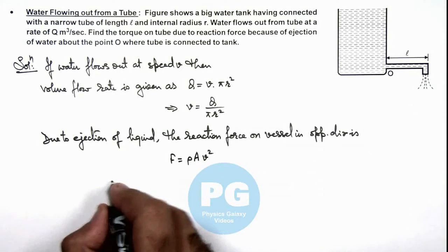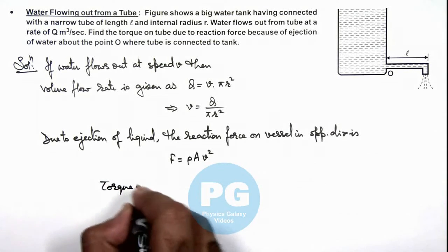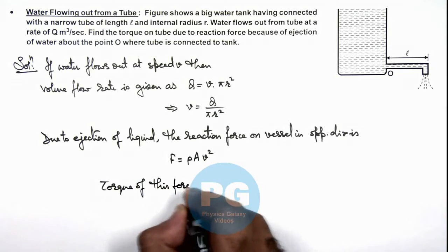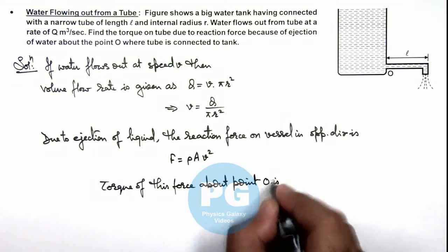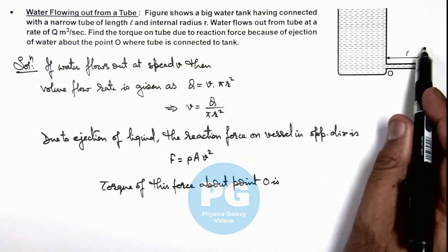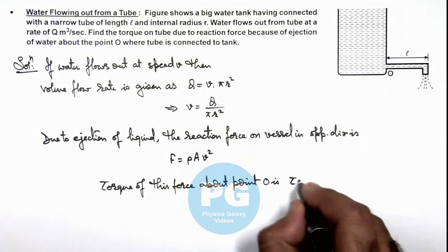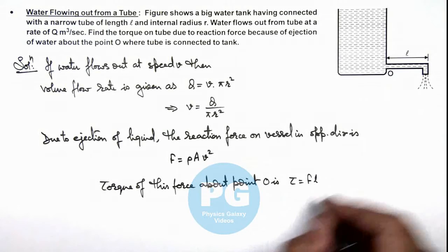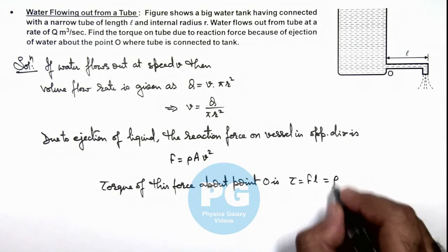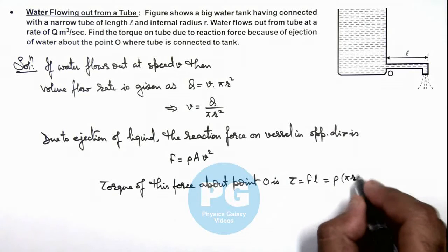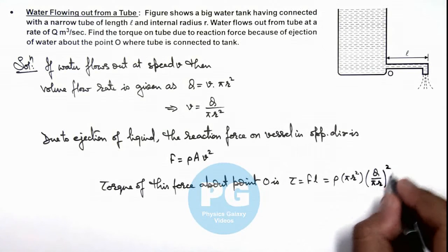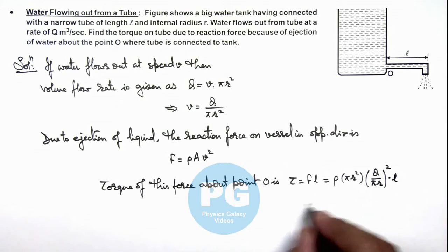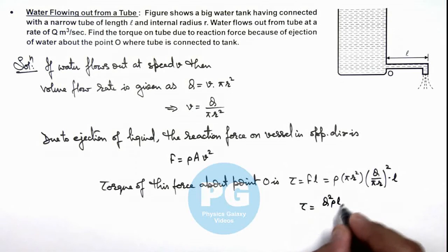As we have the value of force, we can now calculate the torque of this force about point O. As the reaction force is opposite to the direction of ejection, it acts in upward direction. The torque is F × l. Substituting the values: F = ρ × πr² × (Q/πr²)² × l. So this torque finally we are getting is Q²ρl/(πr²). That is the result of this problem.